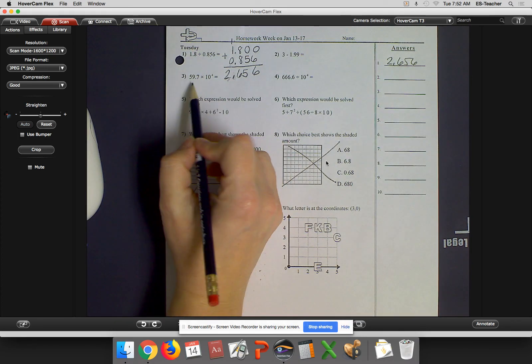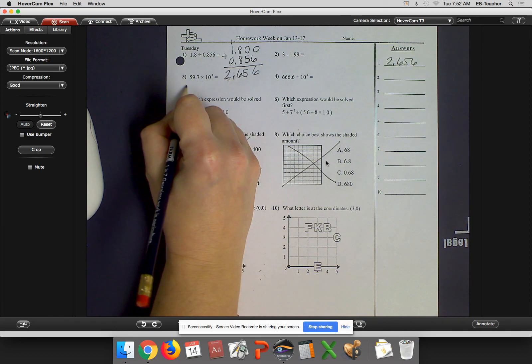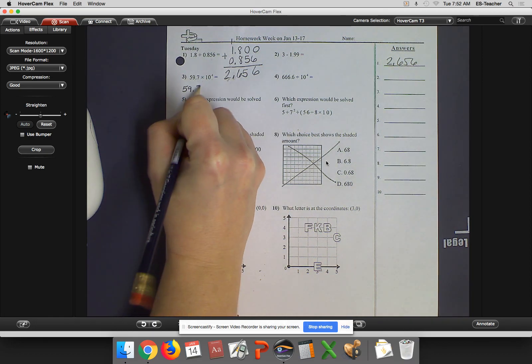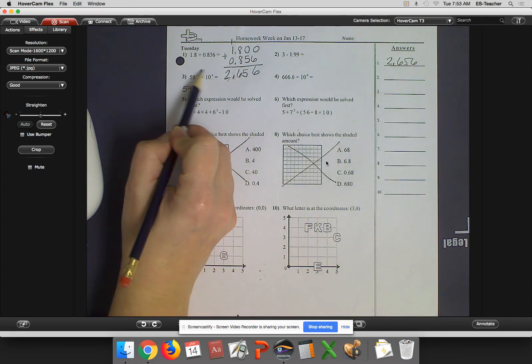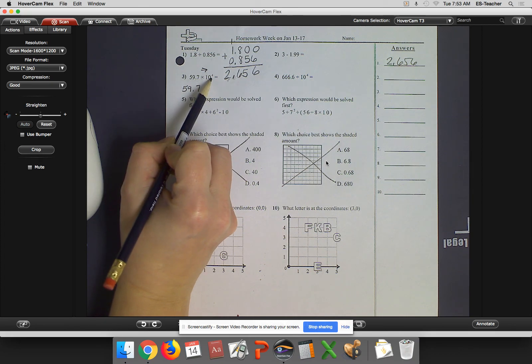For number 3, I have 59 and 7 tenths times 10 to the 4th. Well, I'm going to go ahead and write this out. 59 and 7 tenths, right? This tells me that I'm going to move the decimal to the right because it's multiplication. And then how many times? 4.